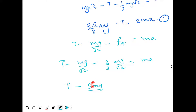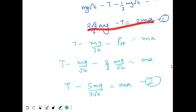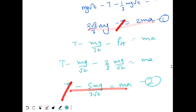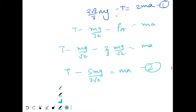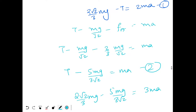Adding the two equations, T and −T cancel. We get: 2mg√2/3 − 5mg/(3√2) = 3ma, which simplifies.